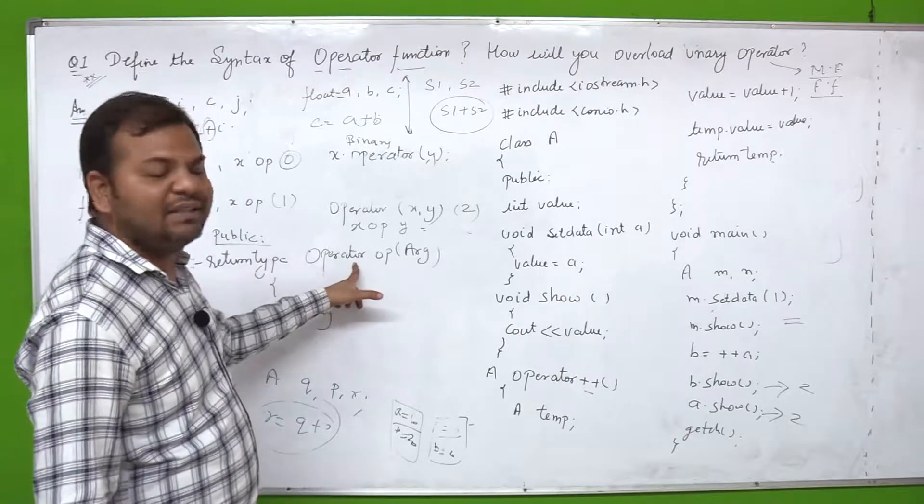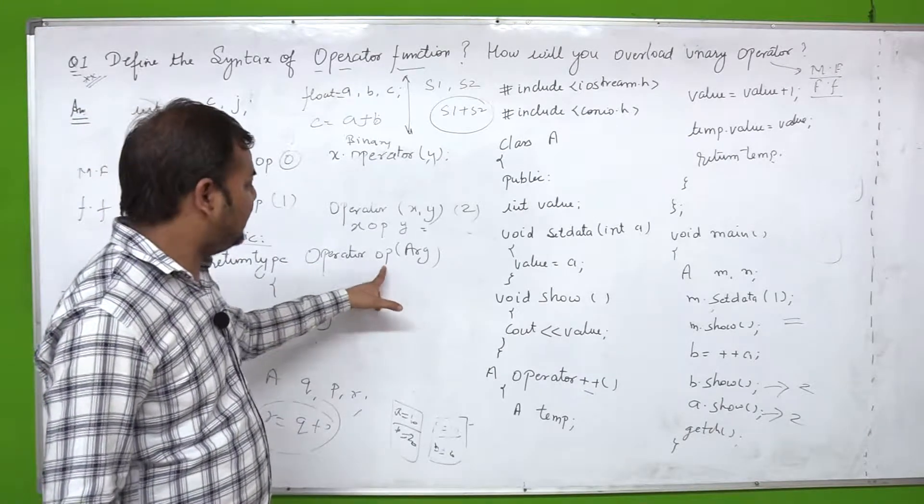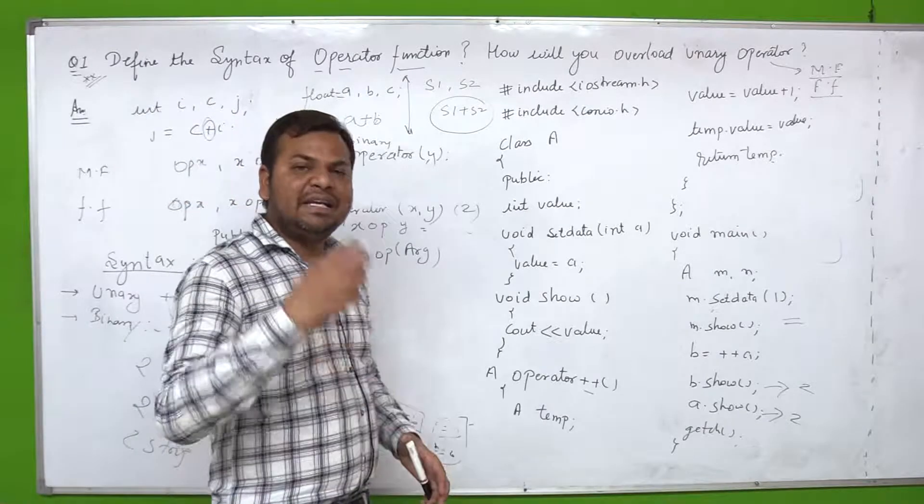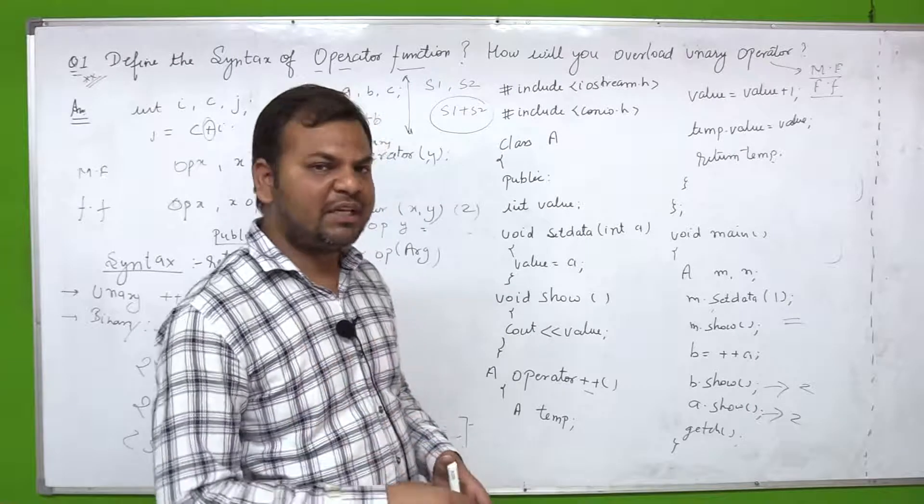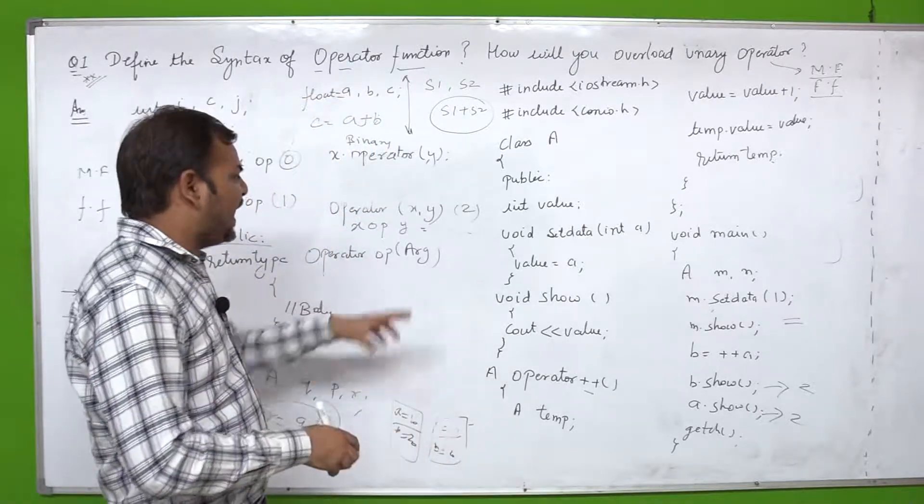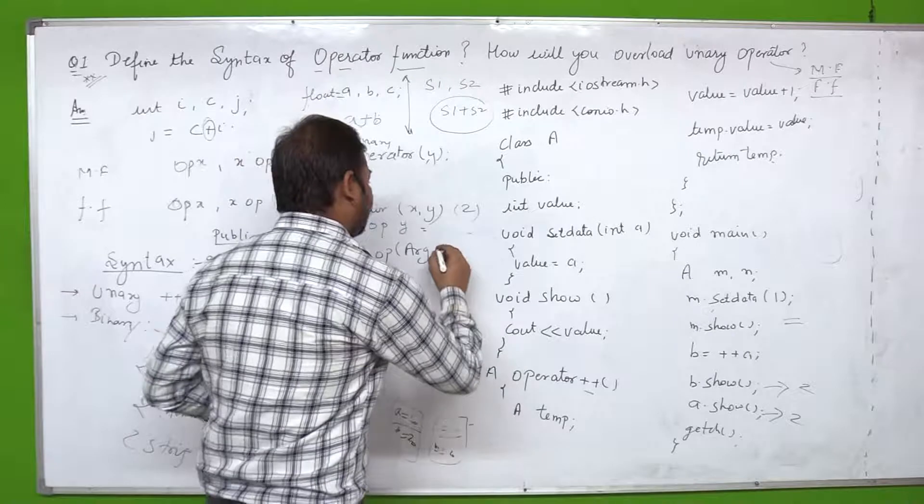Then operator - this is a keyword. Then op means which symbol you want to overload? Plus you want to do? Minus you want to do? Plus plus you want to do? Then argument list. Very most important is argument list.